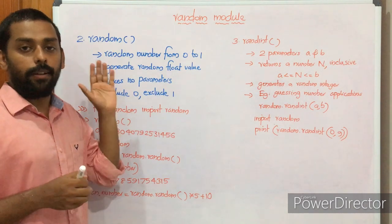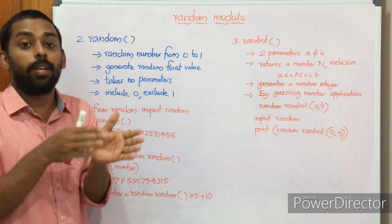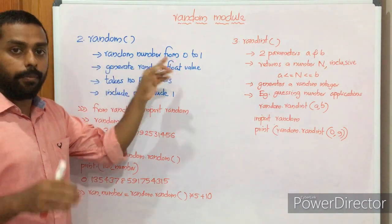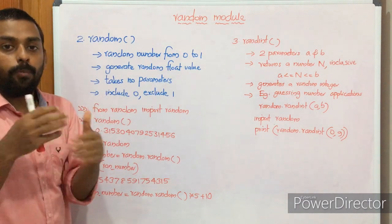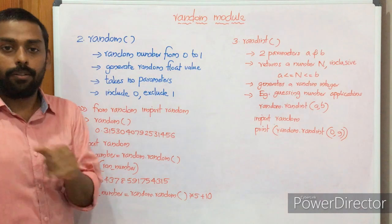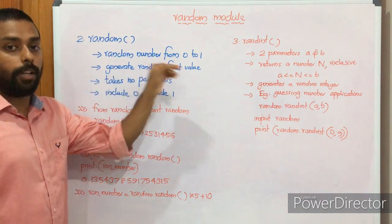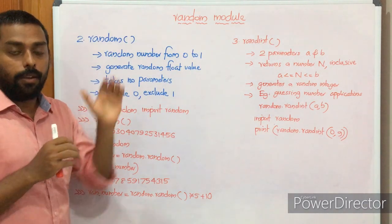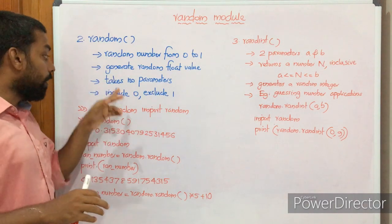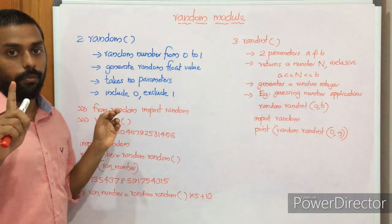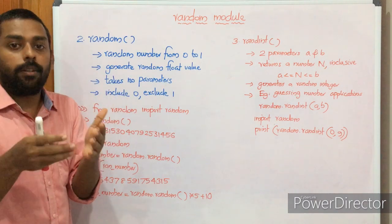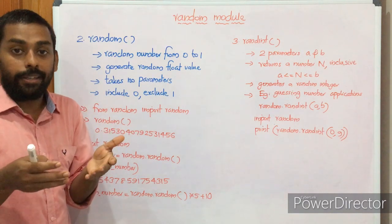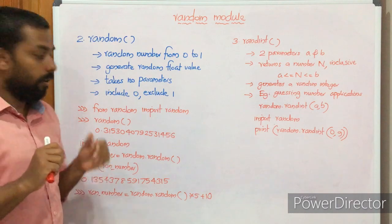Our next function is random(). It is used to generate a random number between 0 and 1, and of course it will be a floating point value like 0.53. It returns a floating point value and does not take any parameters. It includes 0 but excludes 1.